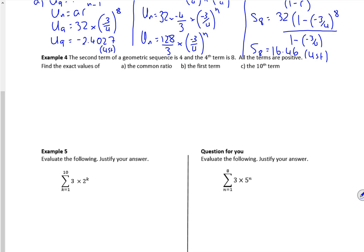So look at these two examples then. So it tells you that the second term of the sequence is four. So u2 is four. It tells you the fourth term is eight. So u4 is eight. Right then. So I want to find the common ratio and the first term first. So let's create two equations and see what we can do then.